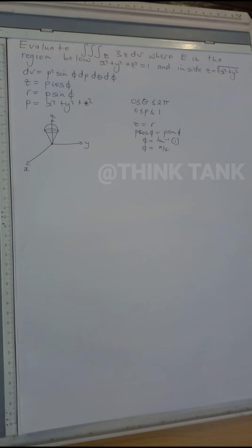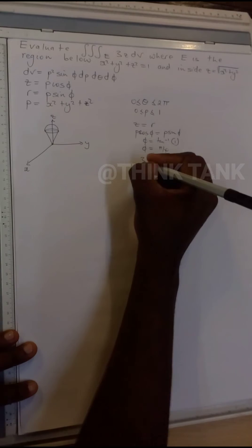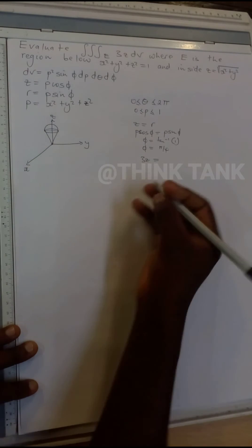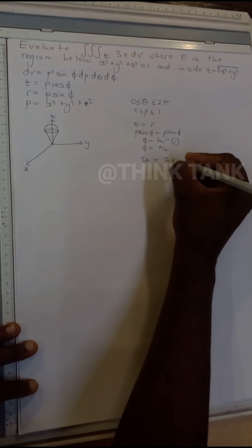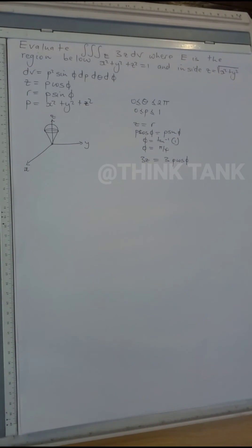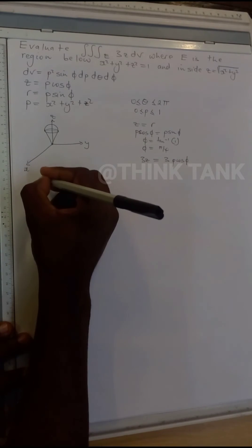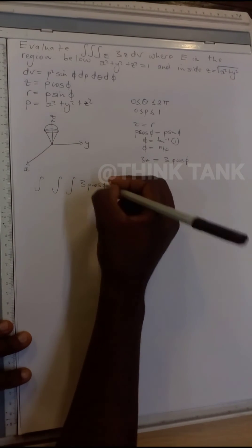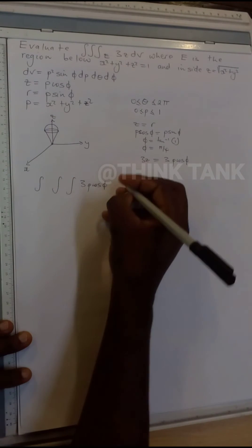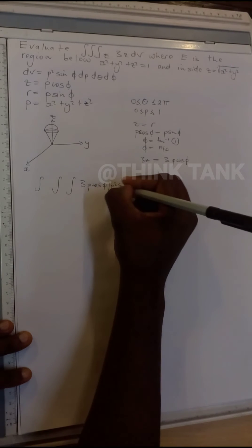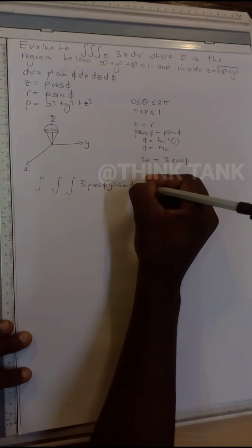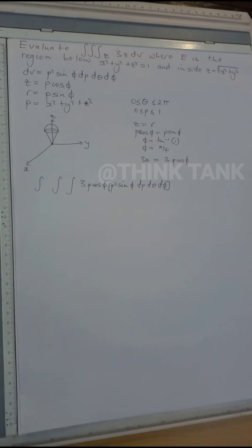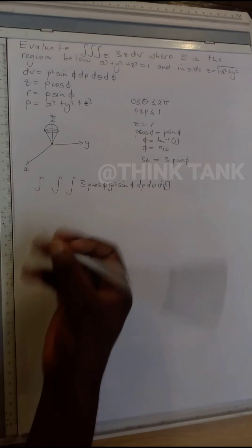Now that we have all the information we need, we can set up the integral. We have 3z, and since z equals ρ cosφ, that means 3z equals 3ρ cosφ. So our new problem is the triple integral of 3ρ cosφ, and dV becomes ρ² sinφ dρ dθ dφ.